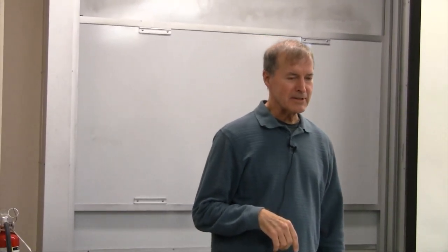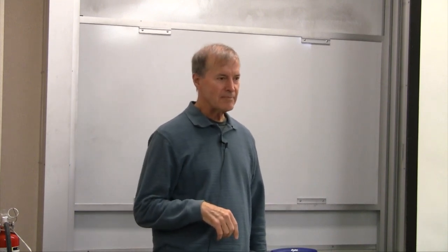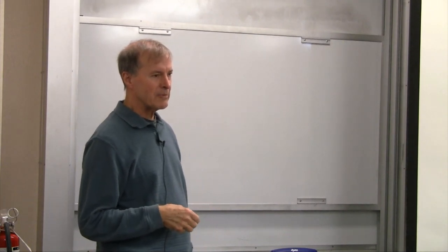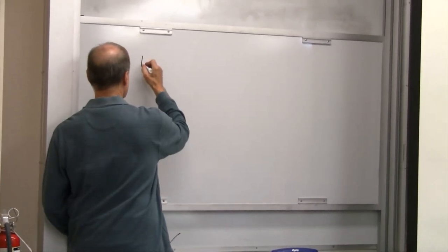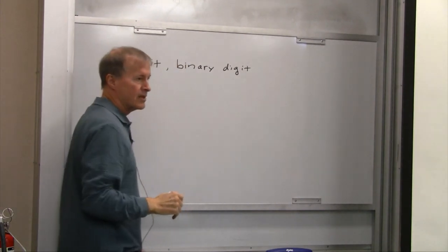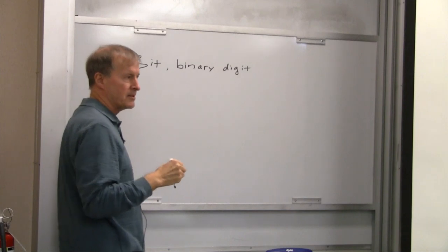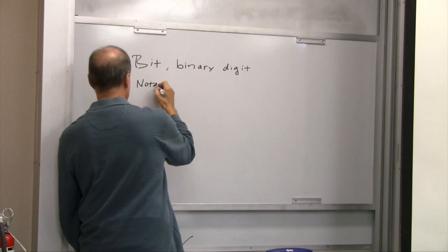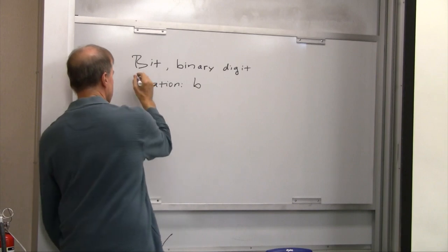Last time we took a look at some binary information. A binary digit is a bit, and today we're going to continue that. We're quantifying how to deal with information in a computer system. A bit, a binary digit — the abbreviation for a bit is a lowercase b. That's a bit.